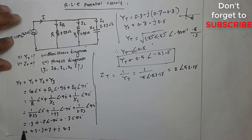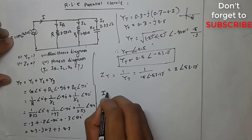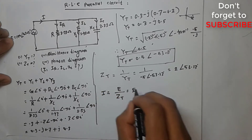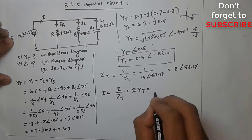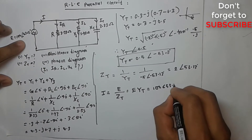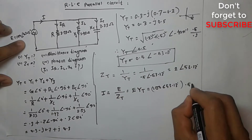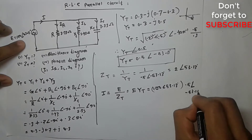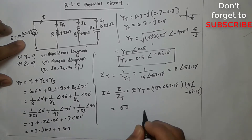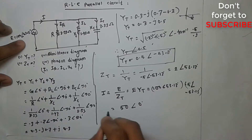Total admittance YT is 0.5 angle minus 53.13 degrees. Total current I = E divided by ZT. Setting the angle: 53.93 degrees and minus 53.93 degrees, angle 0. This is the total I.